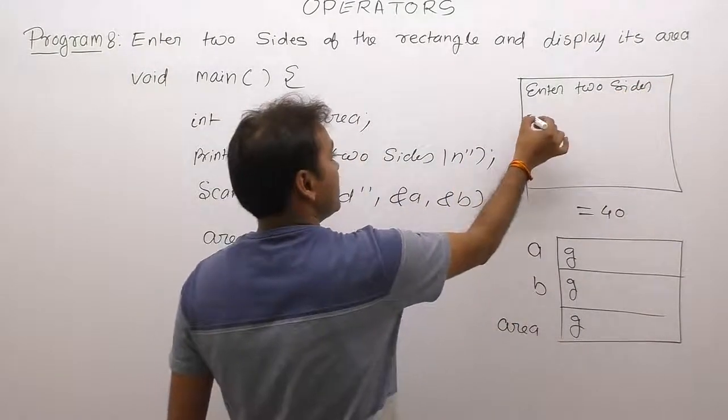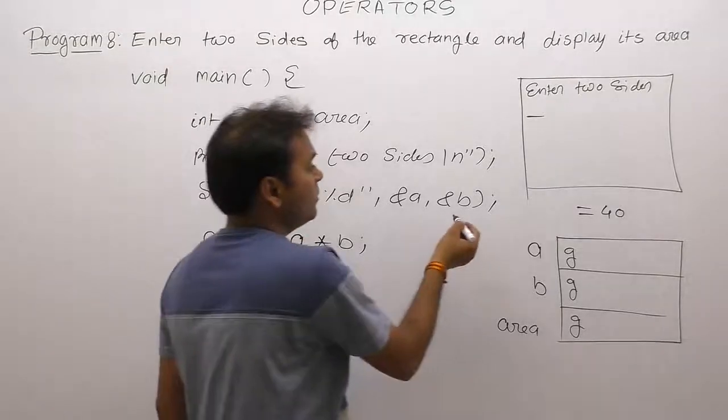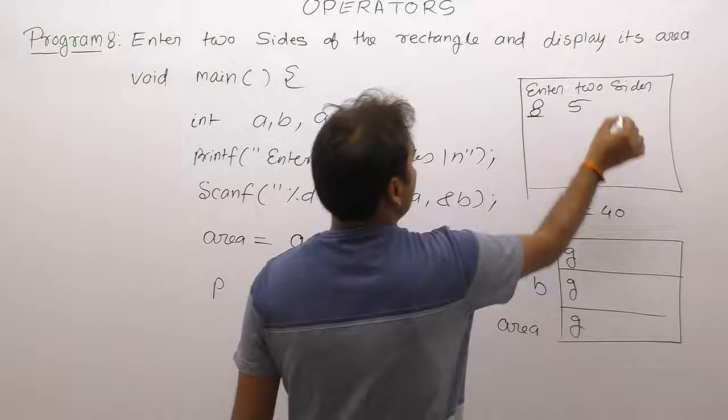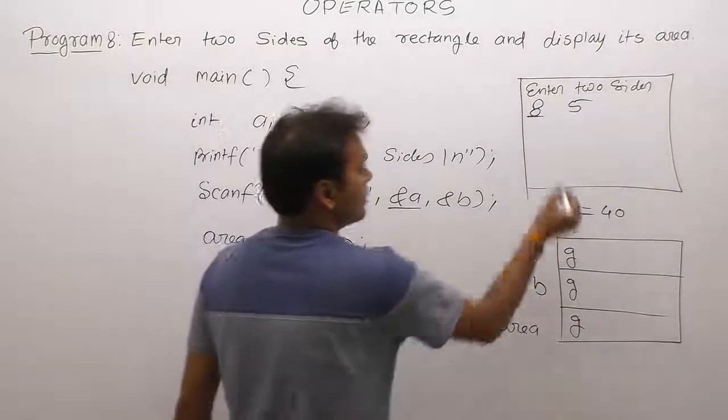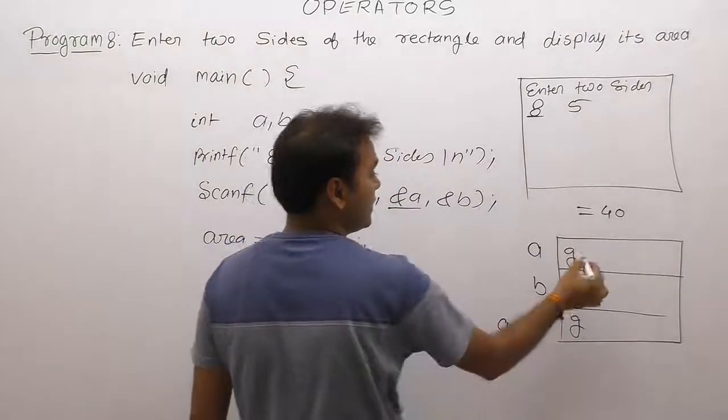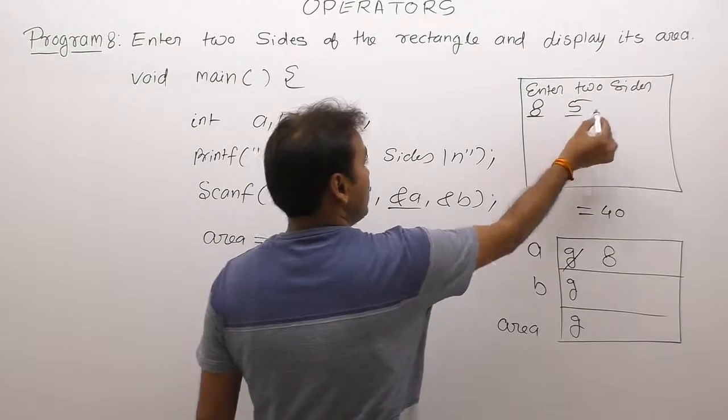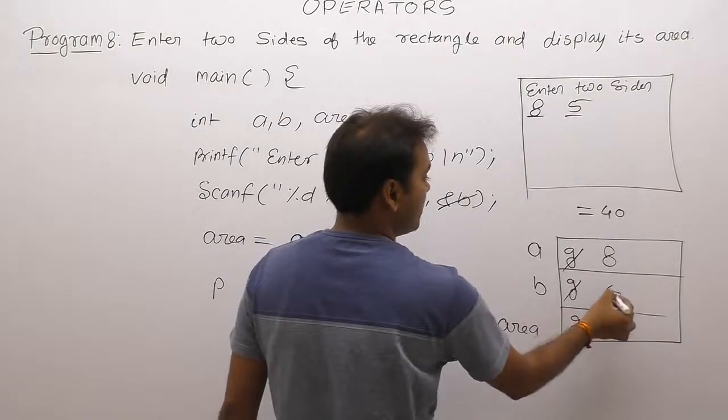Slash n, so cursor goes to the next line. Therefore second time scanf reading value for A and B. And we are entering eight and five, or something five or eight. Both are having same meanings. In that case A is assigned to the, sorry, eight is assigned to the location A. Now garbage replaced by eight. Same as second value five is replaced to the B. It becomes five.